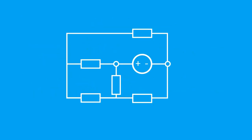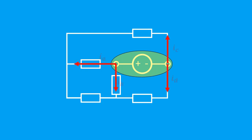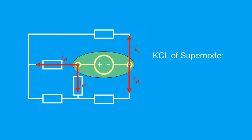In this example, we see a voltage source here and we will surround it and its two terminals with a bubble. This bubble is the supernode. We assign the currents like this and we will write the KCL equation for the supernode. The sum of currents leaving the node is equal to the sum of currents entering the node.